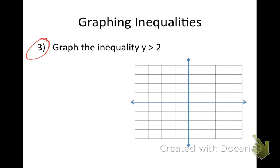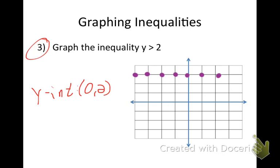This is kind of a tricky one: graph the inequality y is greater than 2. My y-intercept is (0, 2) — the y-intercept is always the constant. What type of line is that going to be? It would be a horizontal line. Y equals is always a horizontal line. That's like saying y is greater than 0x plus 2 — that 0 means I don't rise at all, I'm just running.